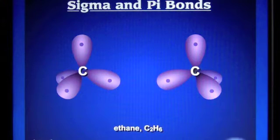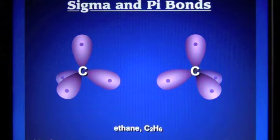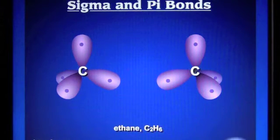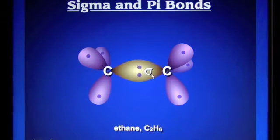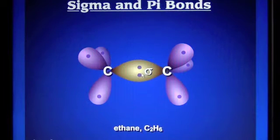Now we're going to create our first sigma bond. A sigma bond is the overlap of hybrid orbitals where you have two electrons being shared directly between the nuclei of two adjacent atoms. The overlap of two of the hybrid orbitals sharing two electrons directly between the nuclei of two adjacent atoms gives us a sigma bond. A sigma bond is a single bond — anytime in a Lewis structure you see a single line, that is a sigma bond.